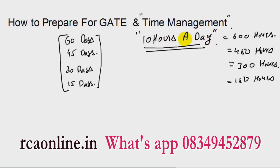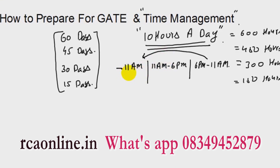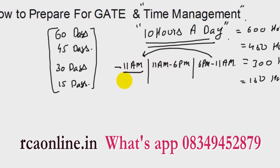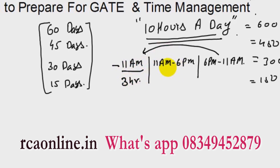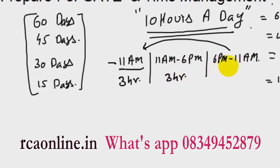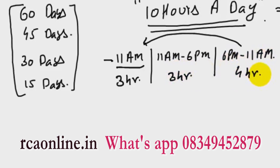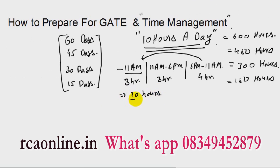So what is time management for this preparation? I divide it into time slots: morning to 11 AM, then 11 AM to 6 PM, and 6 PM to 11 AM the next morning. From morning up to 11 AM, you should study for 3 hours. Then from 11 AM to 6 PM, again study for 3 hours. Then 6 PM to 11 AM morning, study for 4 hours. So total is 10 hours.